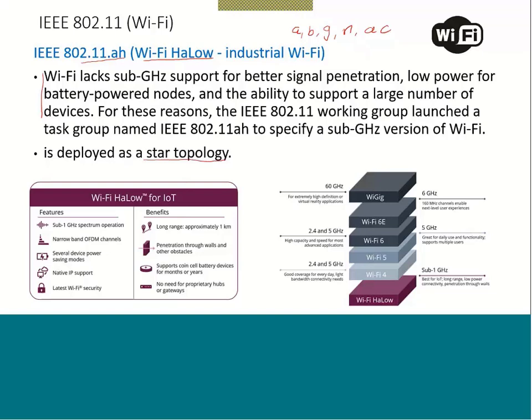Additional features include the latest Wi-Fi security. The key benefit is long range — approximately 1 kilometer. This is very important: traditional Wi-Fi standards have a theoretical range of 250 meters and practically 100 to 150 meters, depending on the environment and obstacles in between. But 802.11ah has a range of approximately 1 kilometer and can penetrate through walls and other obstacles. It also supports coin cell battery devices for months or even years.